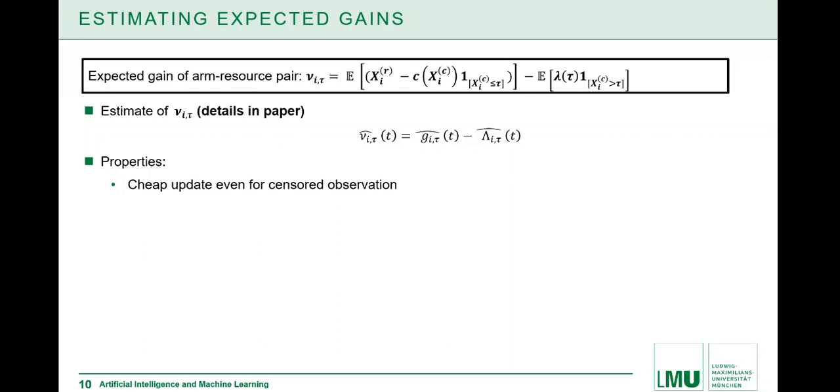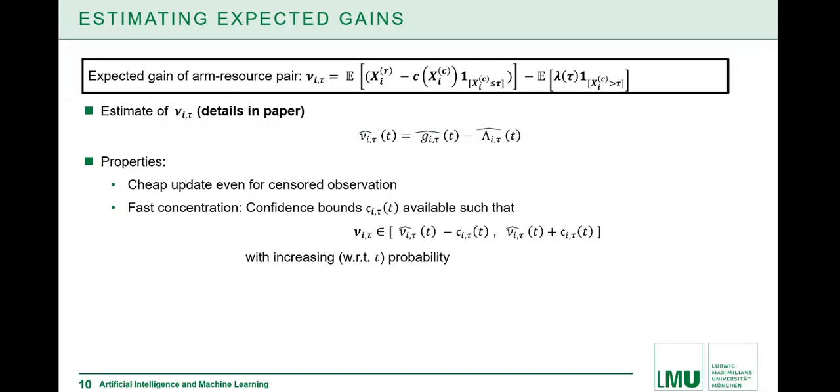The interesting thing about these estimates is we have nice update formulas, even though when we have censored observations. This is in contrast to a simple plugin estimator, which would be the most natural thing to do, where we don't update every resource for a specific arm. For our estimate, it's possible to update along the entire resource sequence for the given arm we have used, which is quite nice for the inference. In addition, we can specify how good our estimates are via concentration inequalities, which give rise to a confidence bound. We can determine a confidence bound such that the expected gains are contained in a confidence bound which covers it with high probability, which increases with the number of rounds.